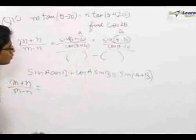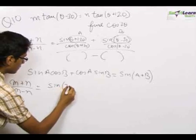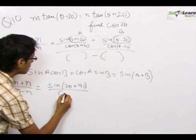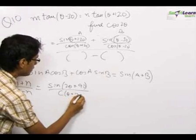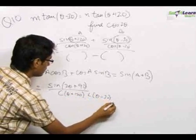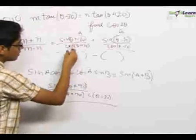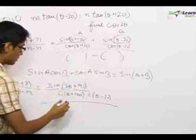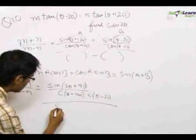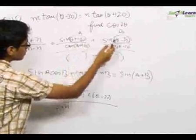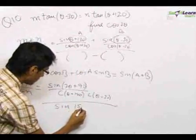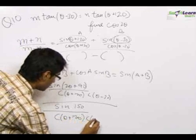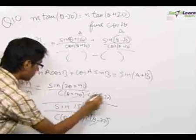So the numerator becomes sin(2θ + 90°) divided by cos(θ + 120°)·cos(θ - 30°). Similarly, the denominator uses the formula sin a cos b minus cos a sin b = sin(a - b), giving sin(a - b) = sin(150°). These cos terms cancel out.